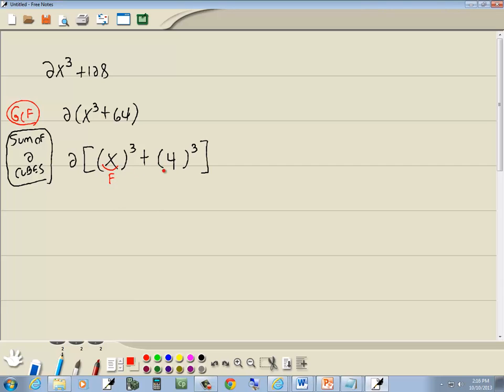So what's inside our first set of parentheses, I'll label it as f for first. And what's in our last set of parentheses is l for last. This is the sum of 2 cubes formula, which says f plus l times f squared minus fl plus l squared.